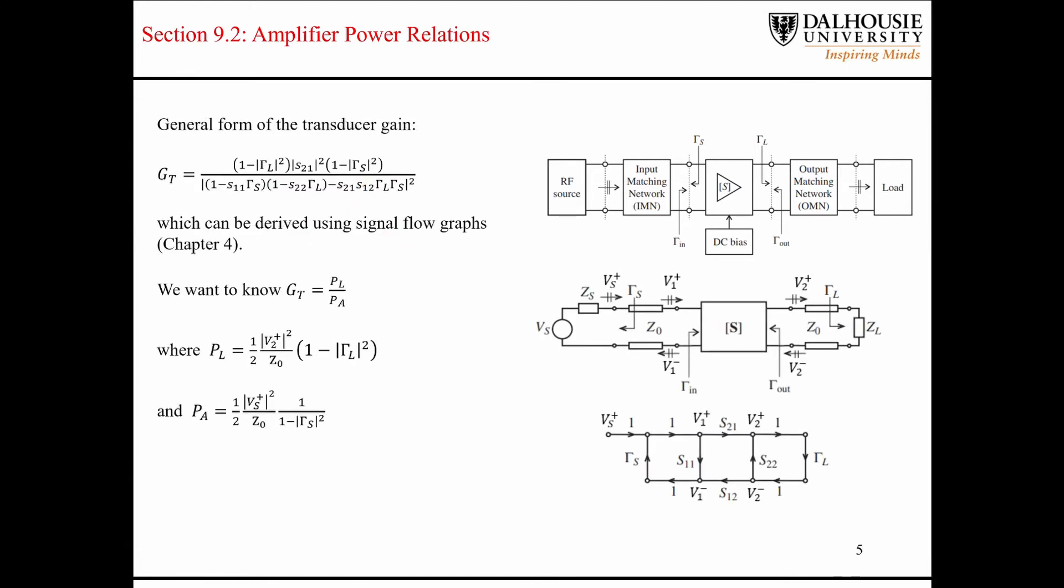This expression for the transducer gain is derived using signal flow graphs, which are discussed in Chapter 4. I'm not going to spend any time today going over signal flow graphs from Chapter 4, but you've seen this before in other control systems courses for simplifying block diagrams representing various control systems.